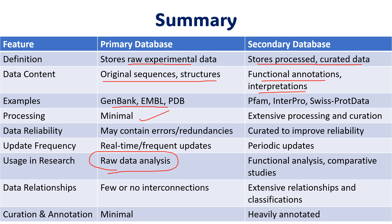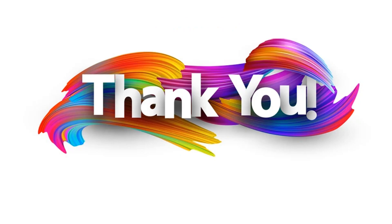This is the basic difference between the primary database and secondary database. There is also a third category — composite databases — but we don't use them too much. This classification is based on which type of data is stored. We have a separate classification of databases depending on which type of information they contain, like structural information or functional information — so we will have structural databases and functional databases. That difference we will see later on.